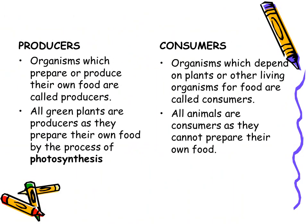First, let us understand the meaning of producers and consumers. Producers — by the name you can understand its meaning — are organisms which prepare or produce their own food. In our environment, who produces food? Yes, you are right: all green plants. All plants produce their own food and give us fruits and vegetables. So all green plants are producers, and the process by which they produce their own food is photosynthesis.